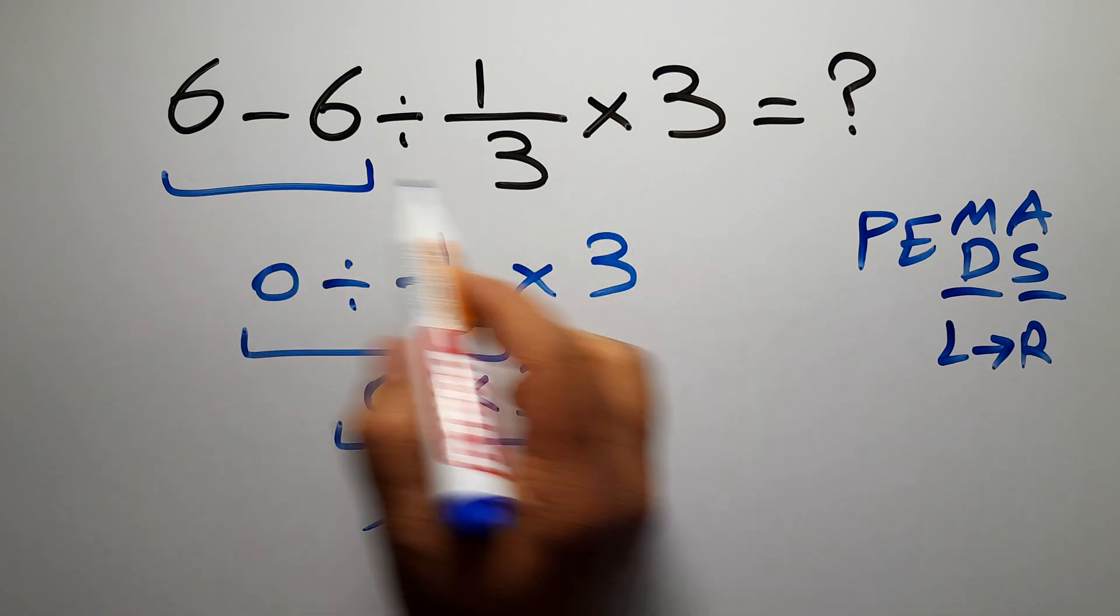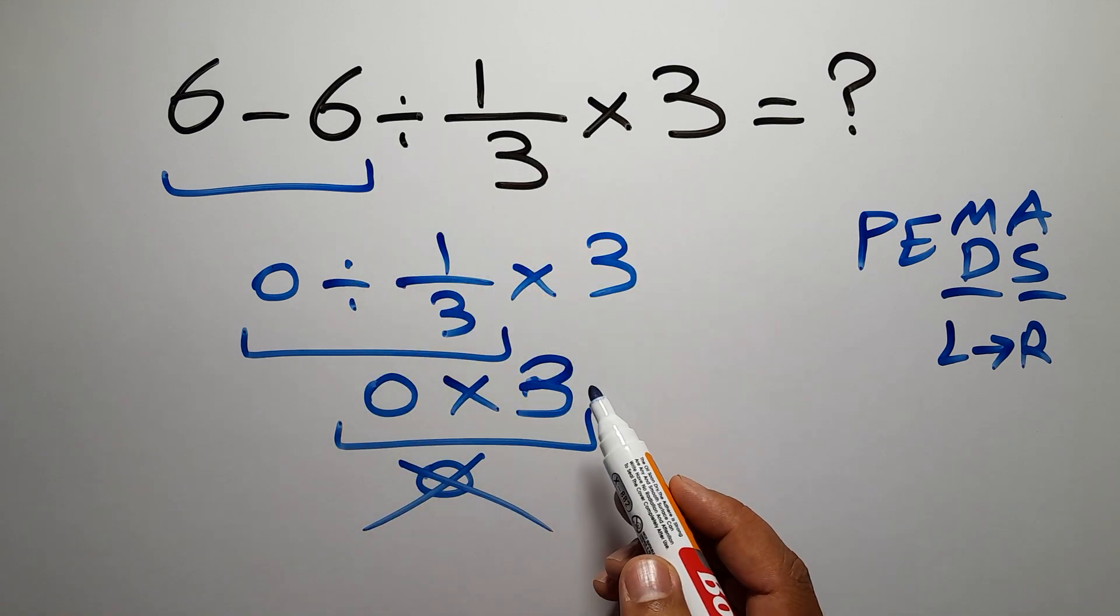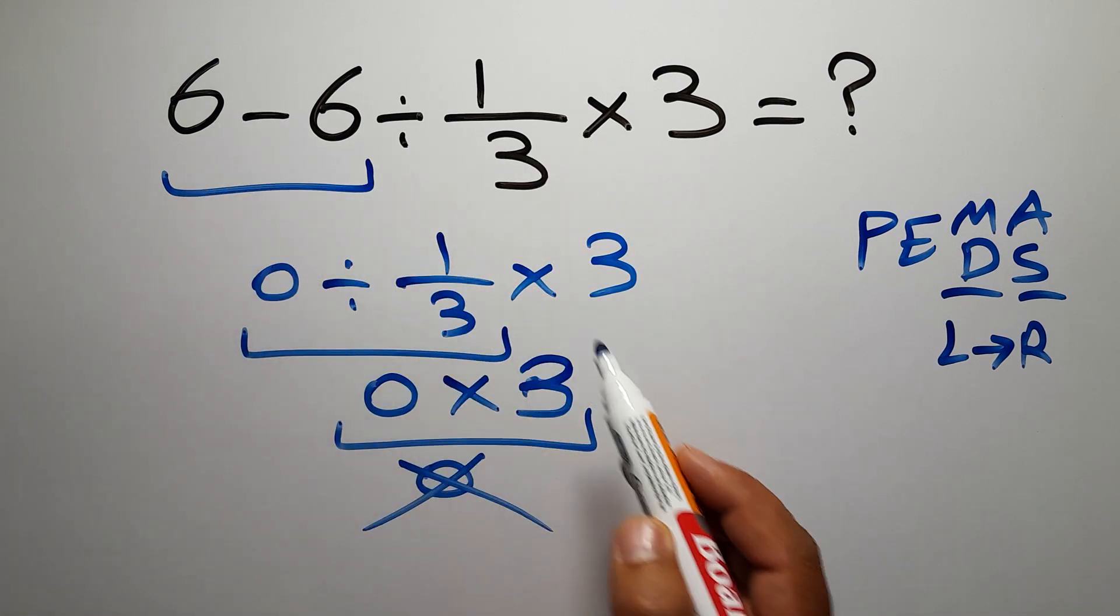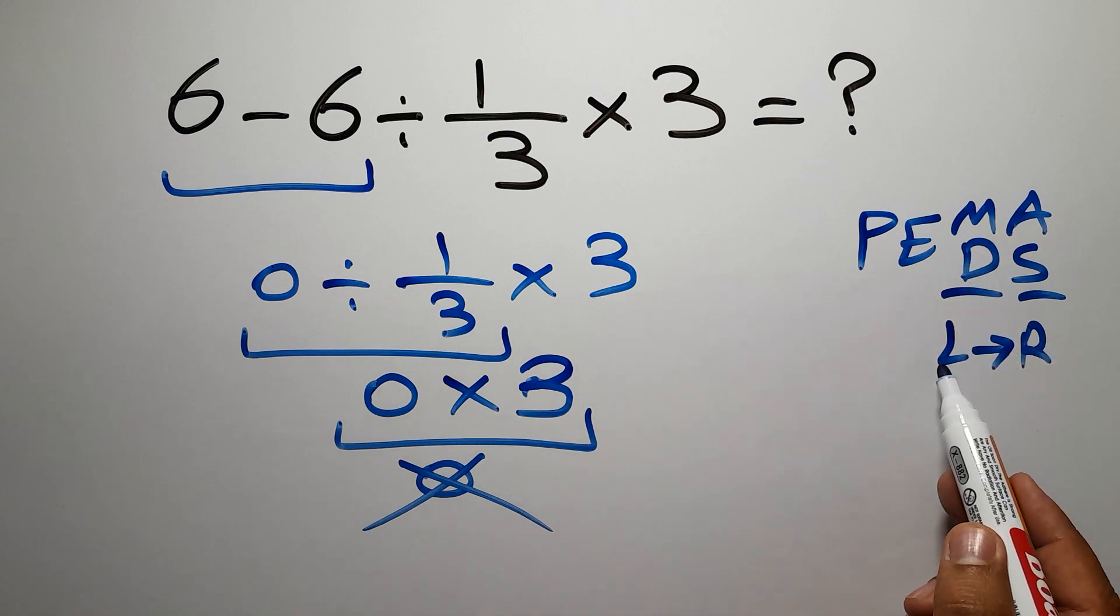In this expression, we have one subtraction, one division, and one multiplication. Multiplication and division have higher priority than subtraction, and also multiplication and division have equal priority, and we have to work from left to right.